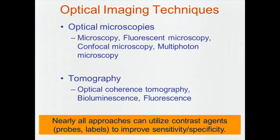In terms of optical technologies, we have optical microscopies — I group several approaches under this umbrella — and then we have tomography: optical coherence tomography, bioluminescence, fluorescence, and what I would call diffuse optical tomography. There is a significant difference between those, but one thing common to nearly all of them is they can utilize contrast agents to make better images with improved sensitivity and specificity. To truly quantify that, you need to appreciate what imaging system you use, what energy you're dealing with, and what contrast agents are accessible.